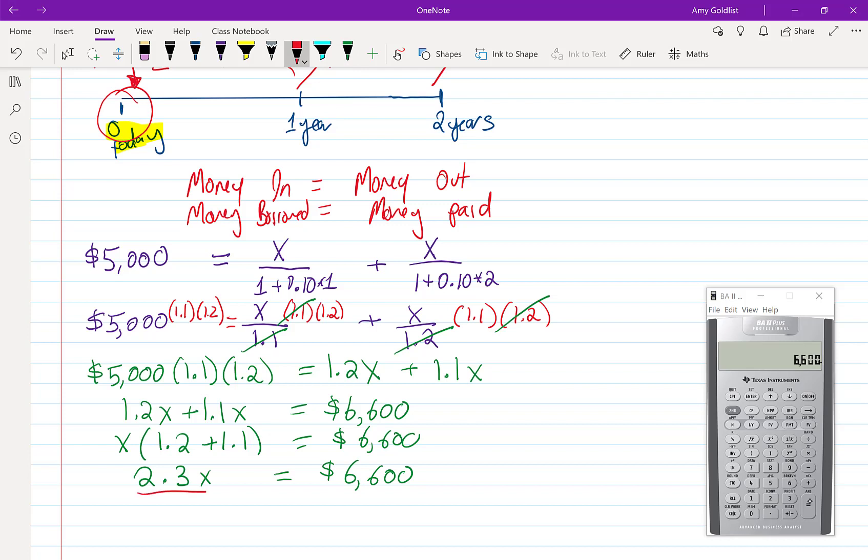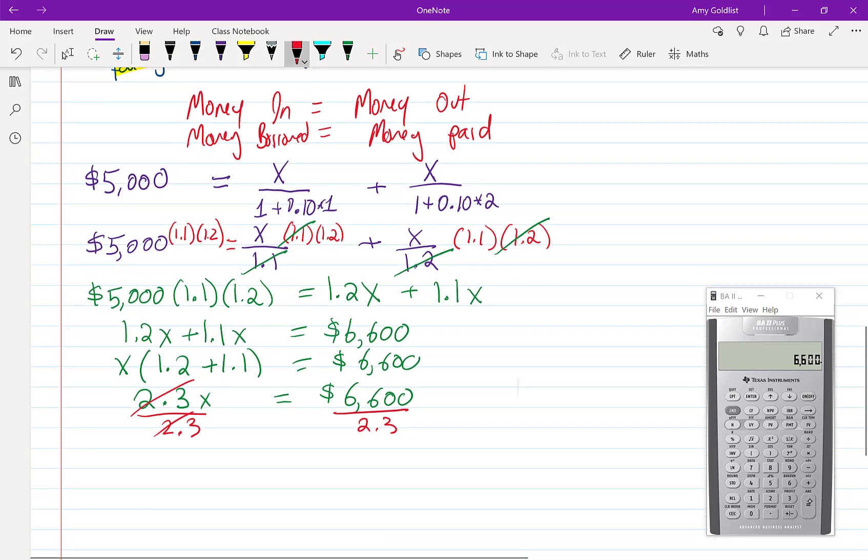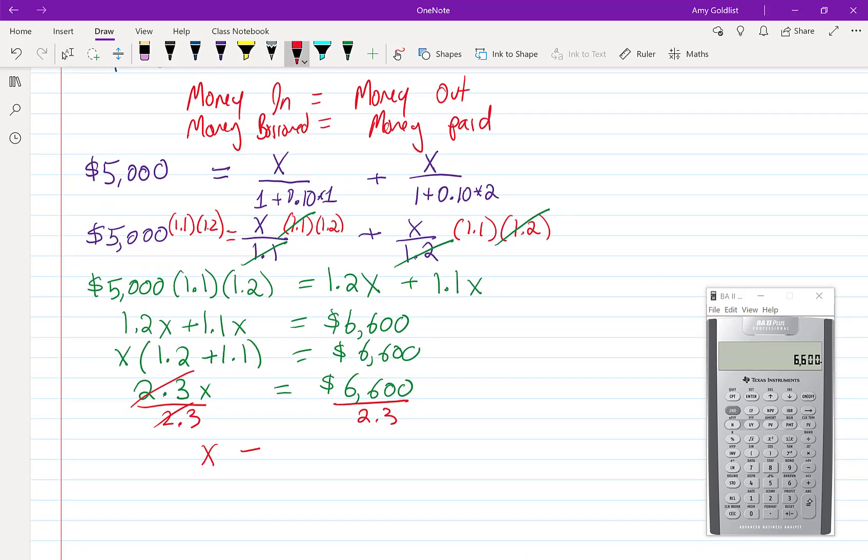I'm going to go ahead and divide both sides by 2.3 and that will clear that 2.3 from the X and what I'm left with is just X equals 6,600 over 2.3.